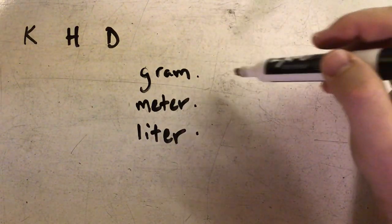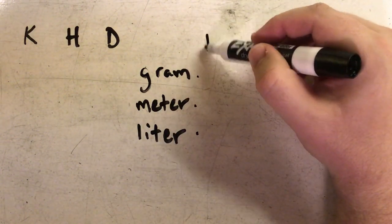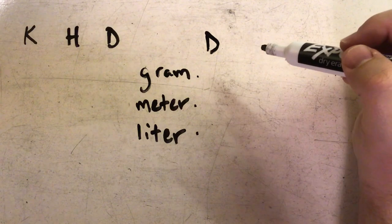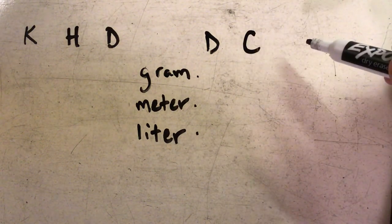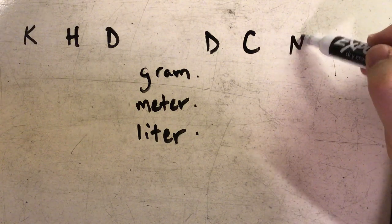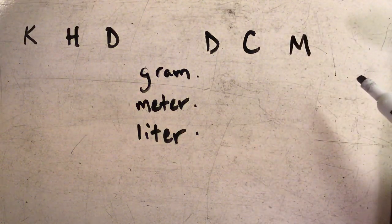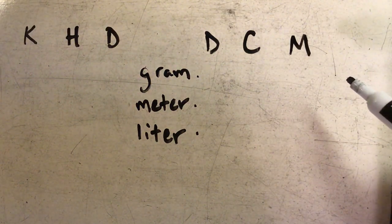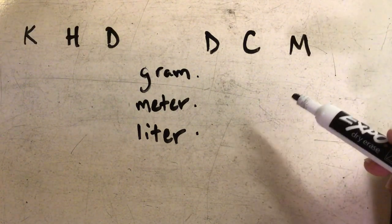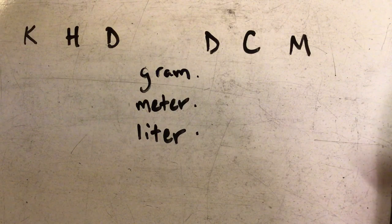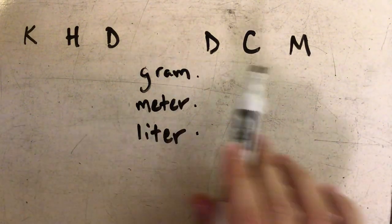Then we also have smaller units as well. We have another D for deci, as in a decimeter, we have a C for centi, and we have an M for milli. Now some of these prefixes are used more commonly than others. Some you might never see used, but you need to be familiar with all of them in order to convert.